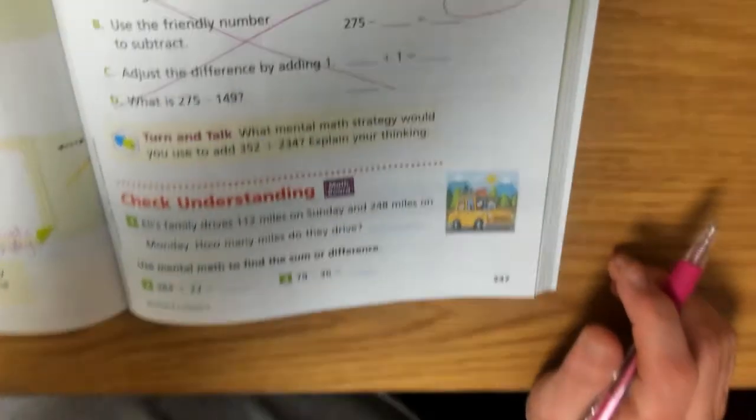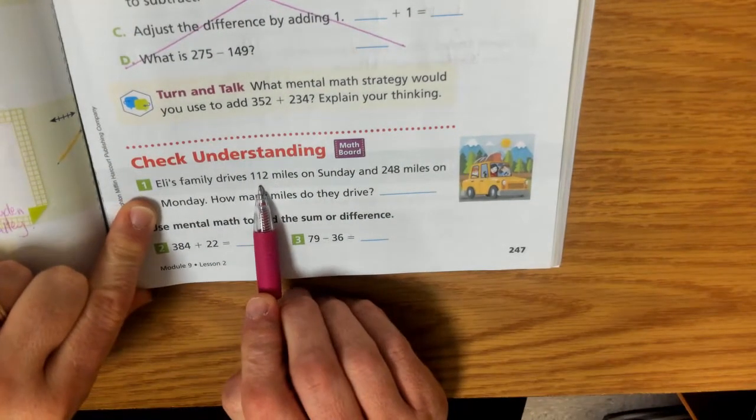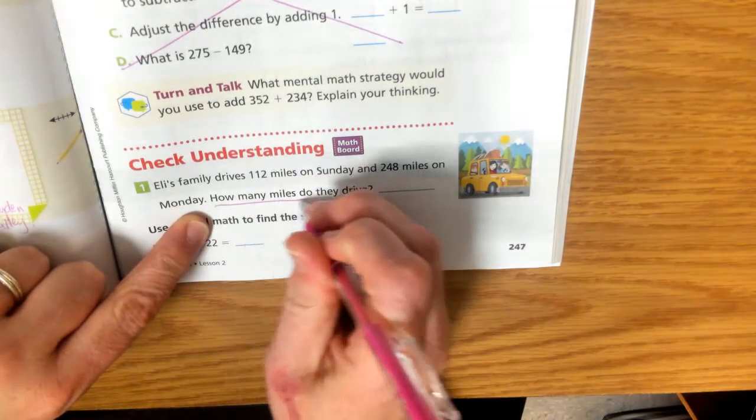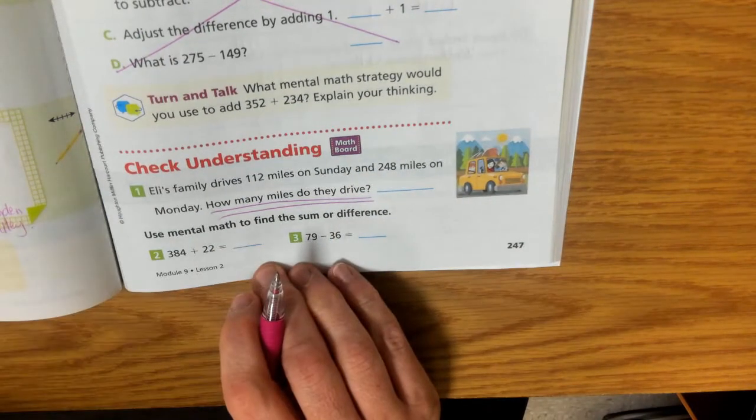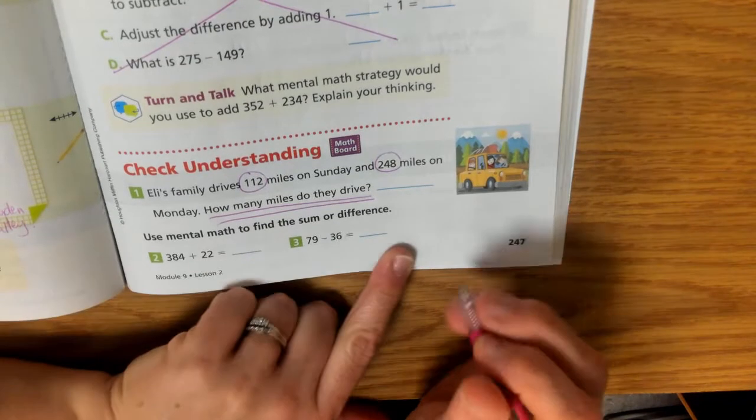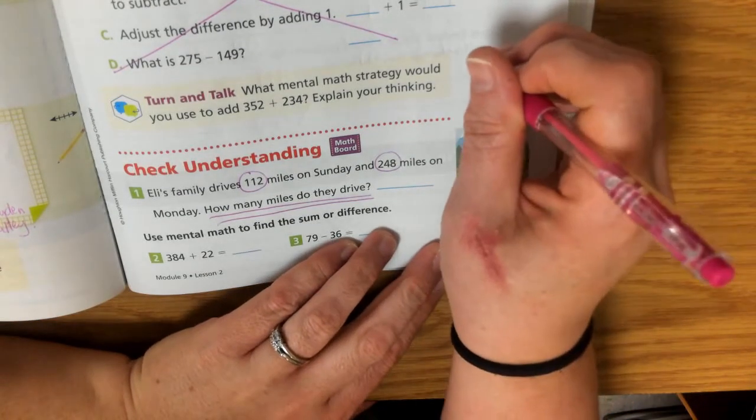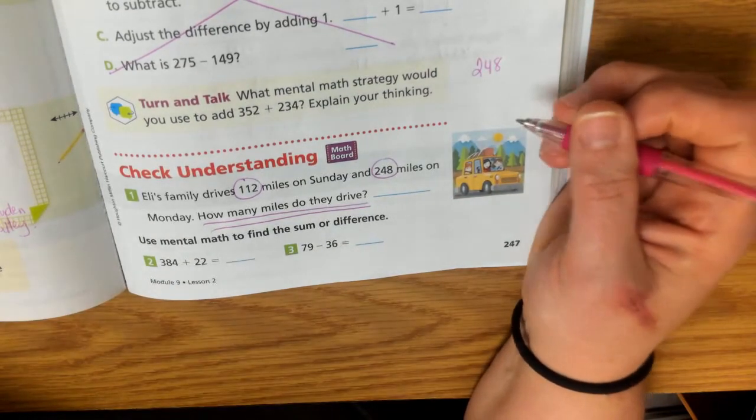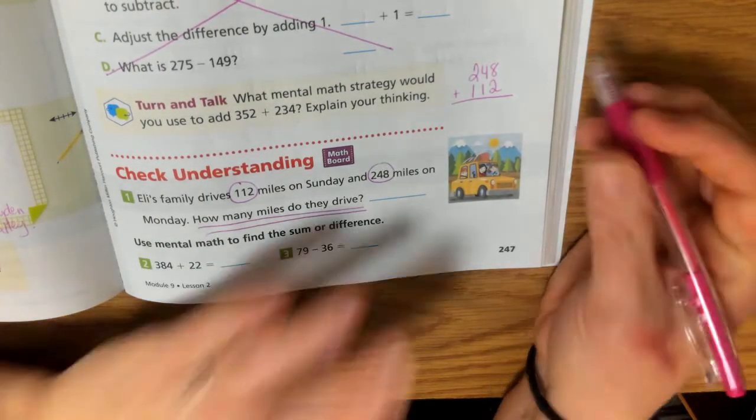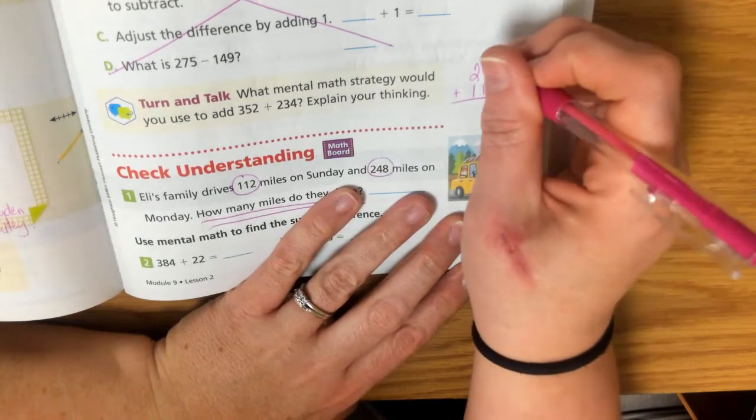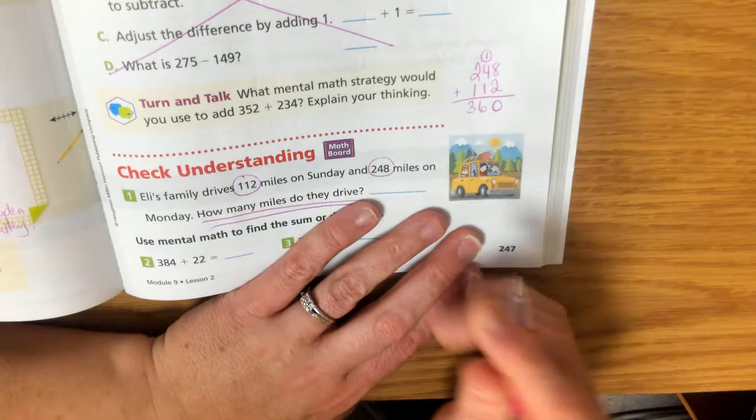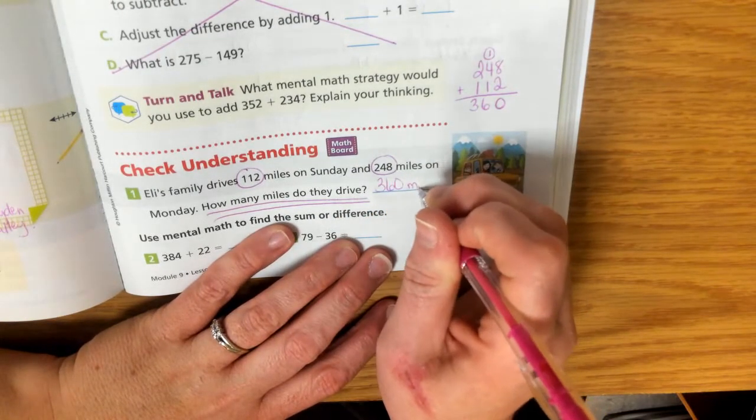So we're going to practice. So we have number 1. Eli's family drives 112 miles on Sunday and 248 miles on Monday. How many miles do they drive? So they want to know the total number of miles they're going to drive on Sunday and Monday. So that means we need to add our 112 plus our 248. So I'm going to actually come up here. 248. I always like to put the bigger number on top just because I have to do that with subtraction so it's easier for me if I just always put the bigger number on top. So 8 plus 2 is 10. Regroup my 1. 1 plus 4 is 5 plus 1 is 6. 2 plus 1 is 3. So they drive 360 miles.